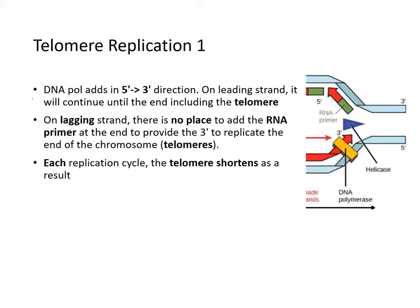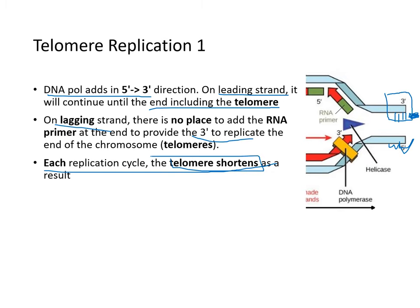There is another problem with DNA synthesis. Since DNA polymerase adds nucleotides in the 5' to 3' direction, on the leading strand it continues to the very end including the telomere. But on the lagging strand there is no room to replicate the end because an RNA primer would need to be placed where no sequence exists. As a result, each replication cycle the telomere shortens.